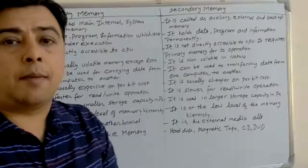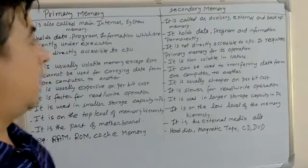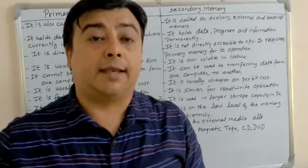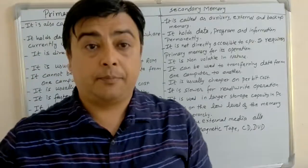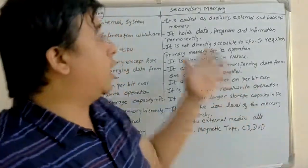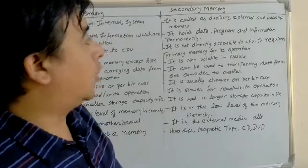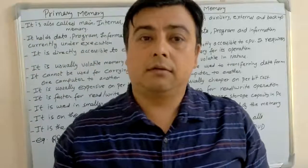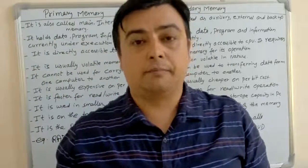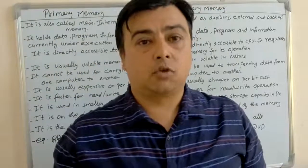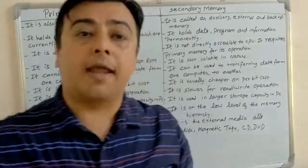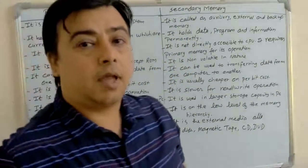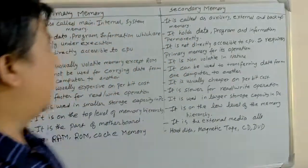Primary memory are those memory which are volatile in nature, except ROM, and secondary memory are those memory which are non-volatile in nature. They are used for permanent storage, and primary memory is used for temporary storage.